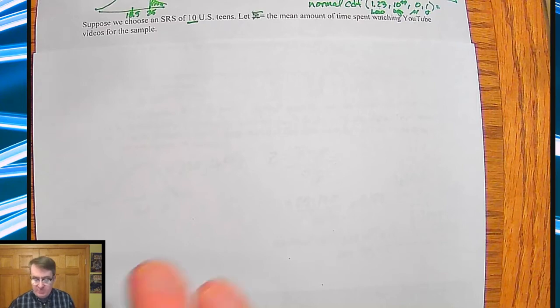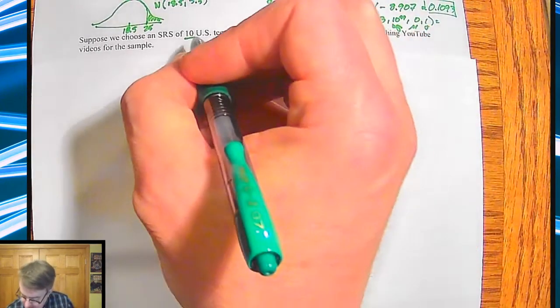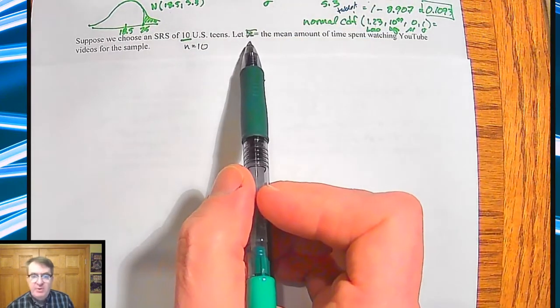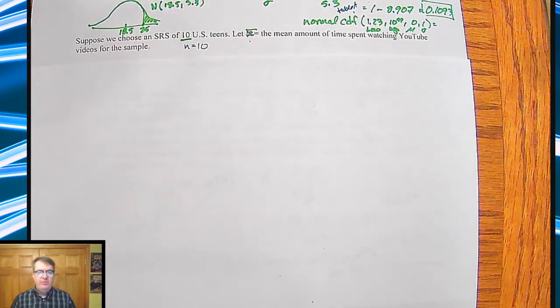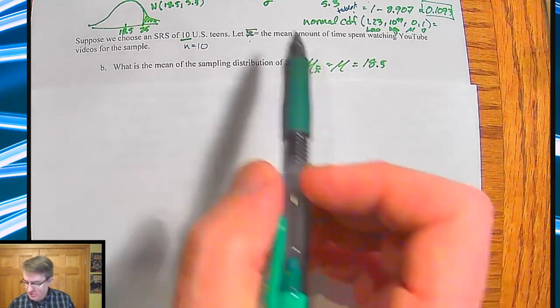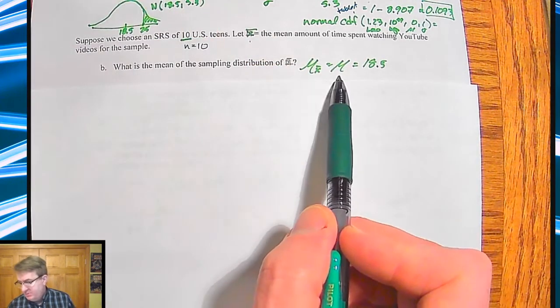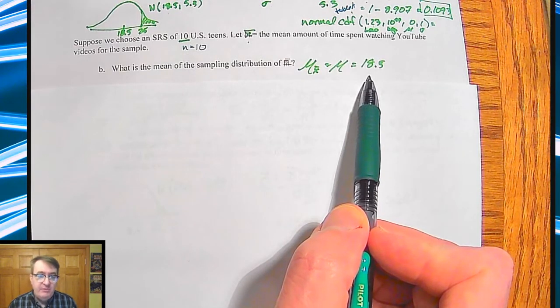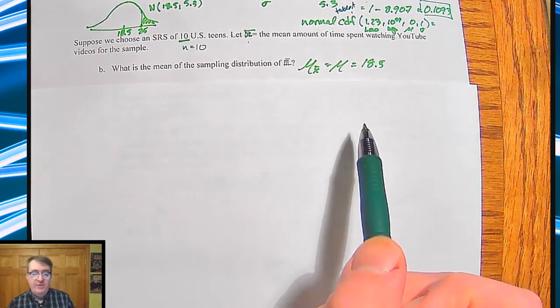Now, what happens if we take a sample of 10? So in this context, this is now my new n value. For those of you downloading my notes, I apologize. Somehow the X bar didn't come through. So these should be X bars. So first of all, the mean of the sample distribution, like we said up above, is just going to be the same as the mean of the population. So the mean of this sampling of groups of 10 is going to be 18.5 minutes.